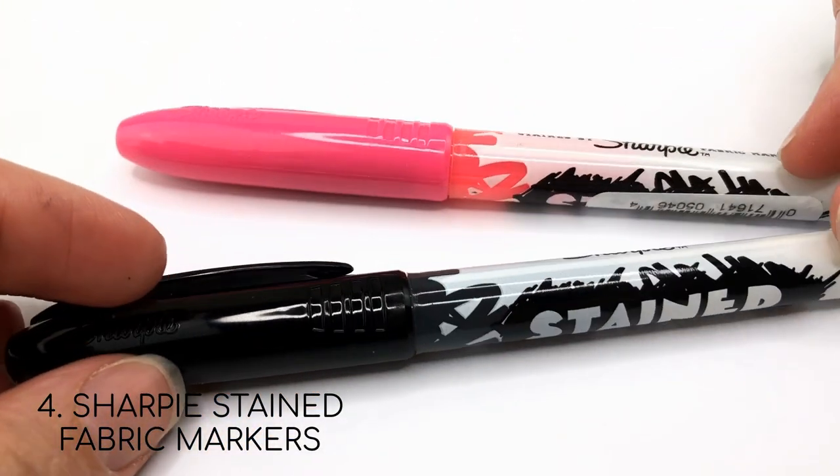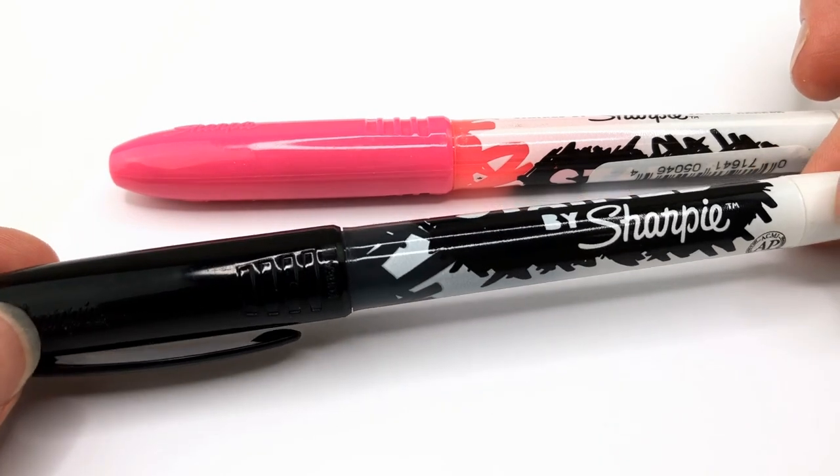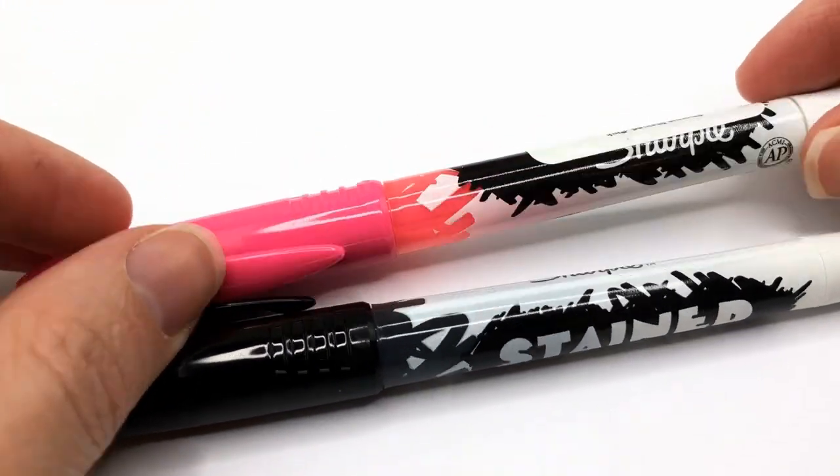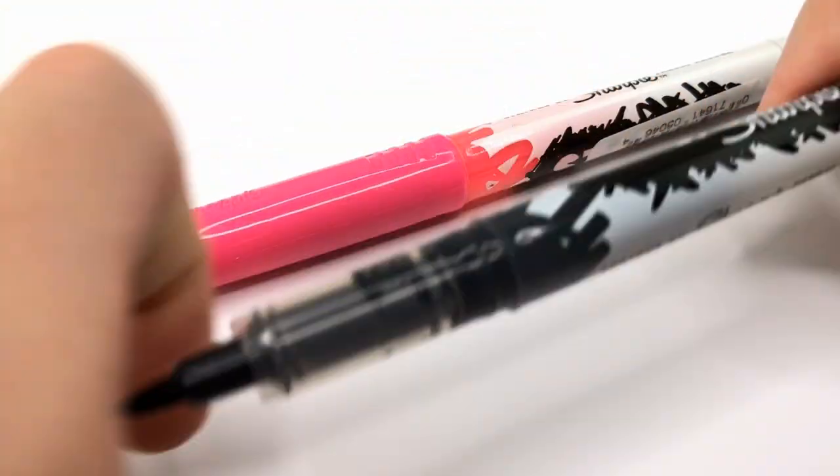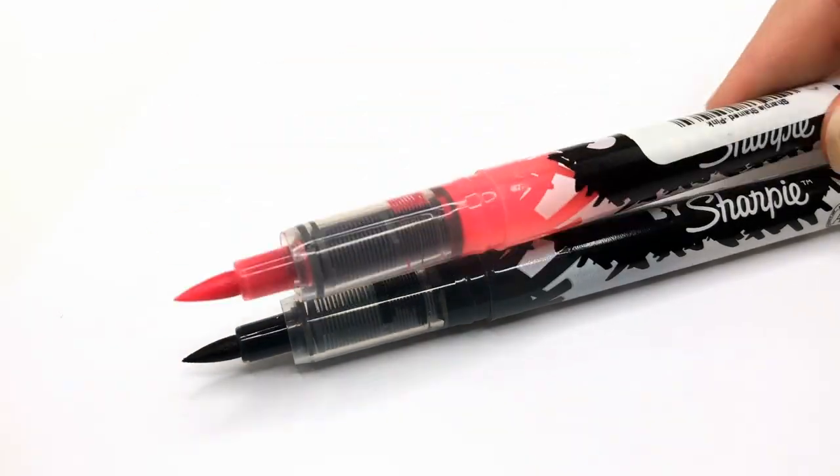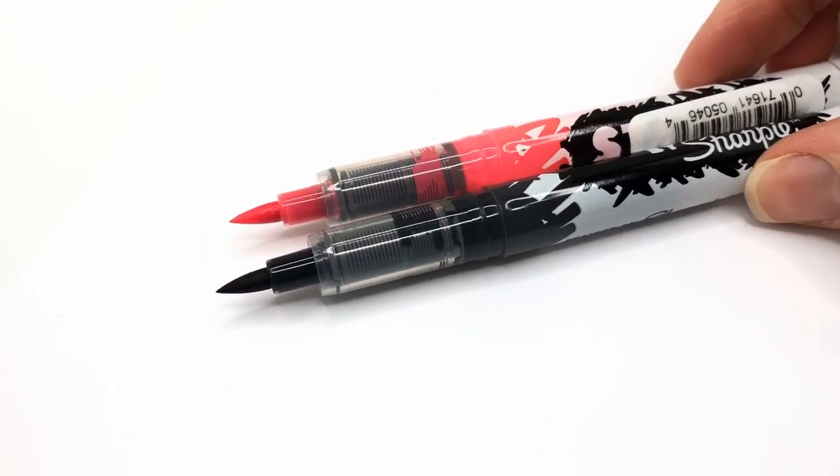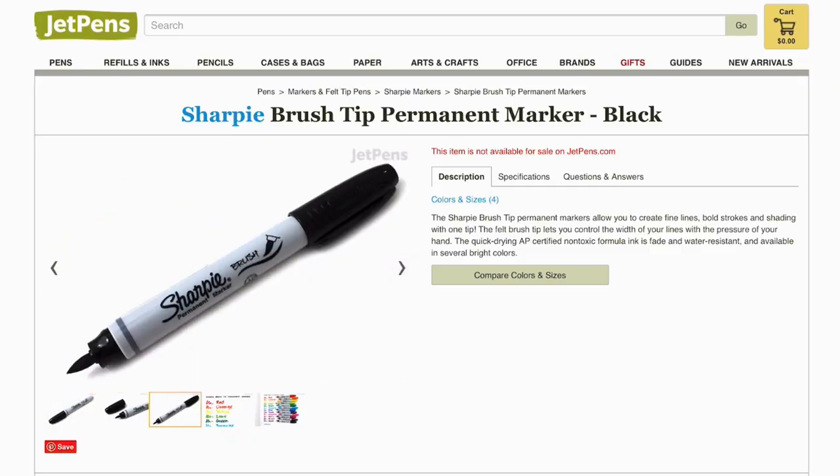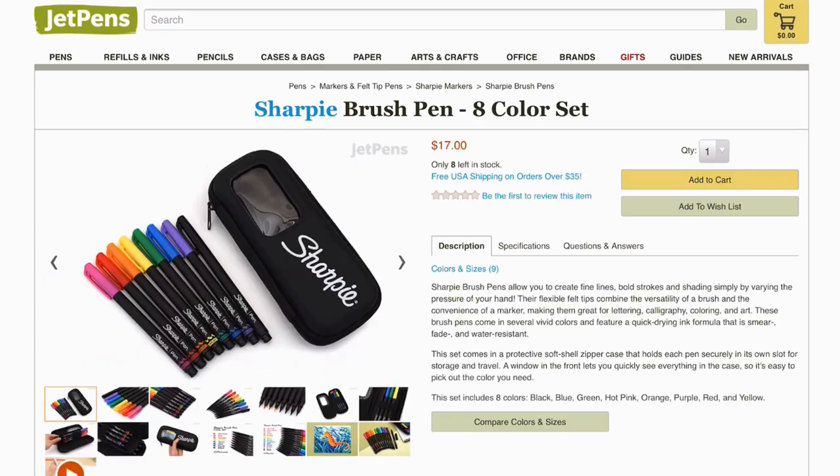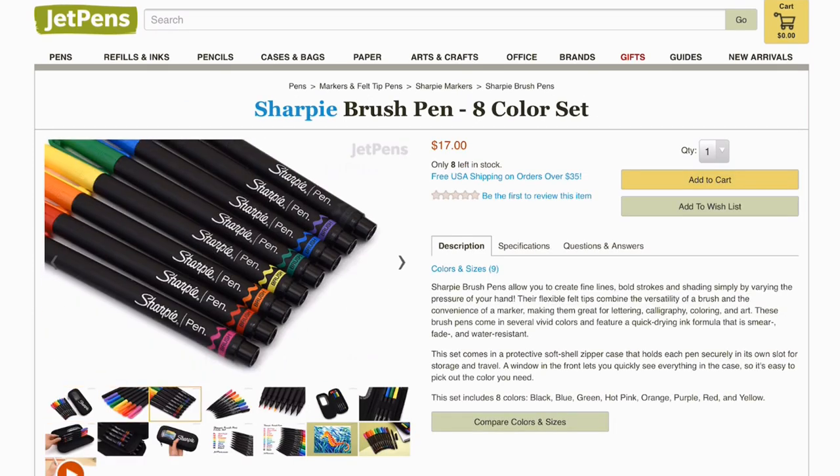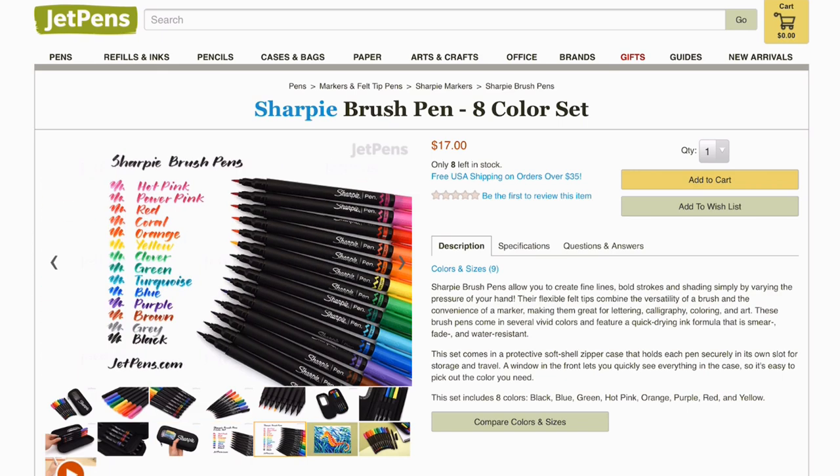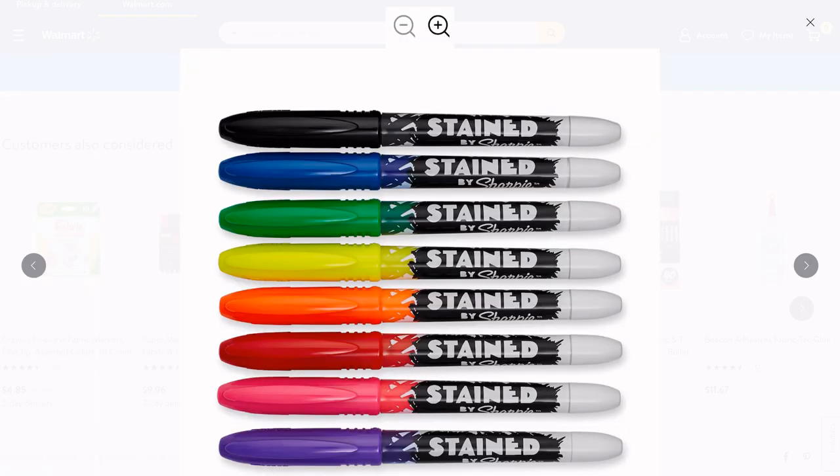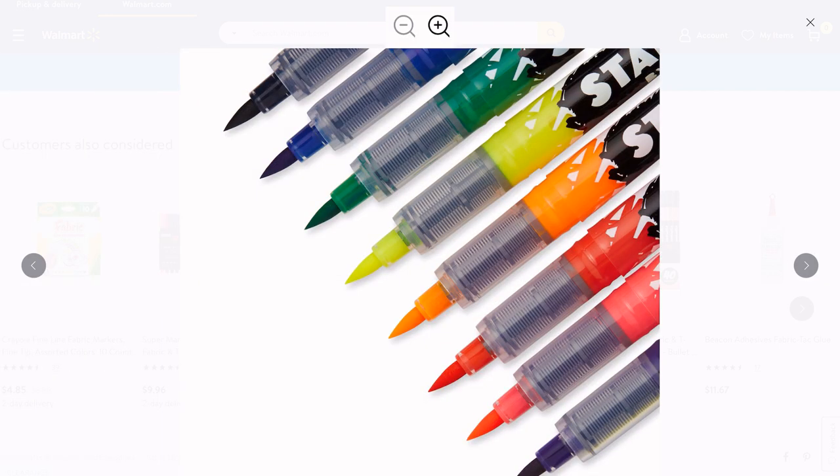The next pens you've probably seen, they're absolutely worth the cost and everything. These are Sharpie stained fabric markers. I remember first hearing about these thinking, wait, those aren't the Sharpie brush pens. And every time I talk about them, I get someone asking about the Sharpie brush pens. So Sharpie has the huge brush pens and the small brush pens. These are the stained fabric markers. They don't advertise them as brush pens, but they should. They're still some of my favorites as brush pens.